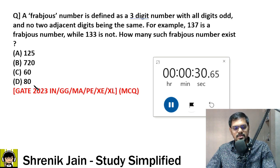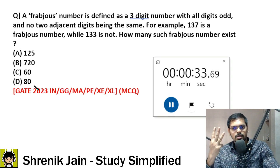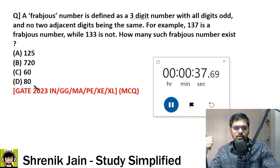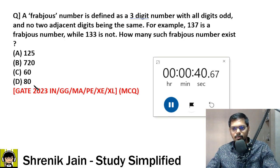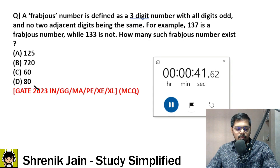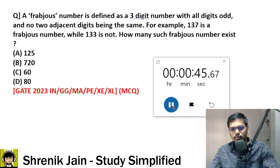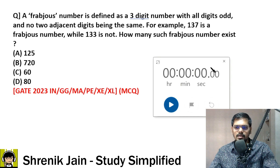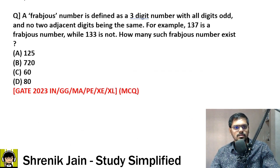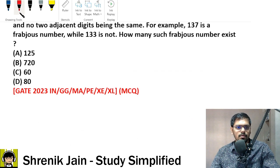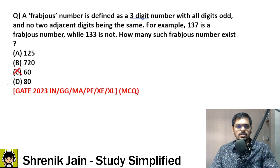You have the last 15 seconds to go — three-digit number, how many are fraptious? You would have commented: 'Sir, the answer is 60.' And yes, that is the trap — that's what I said at the start. It is a tricky question. The answer is not 60. The answer is 80.